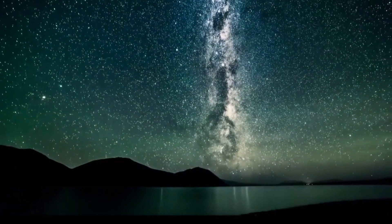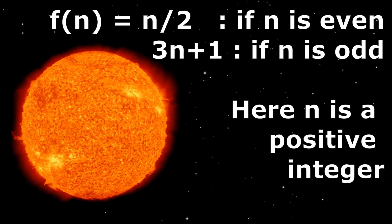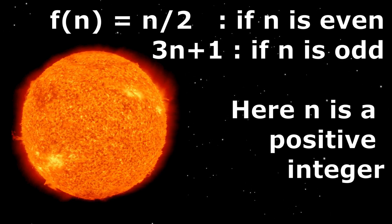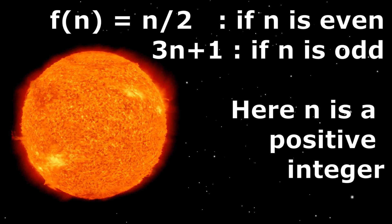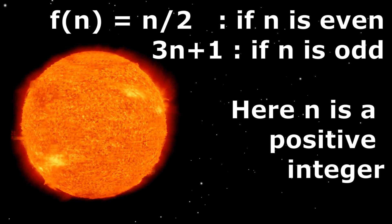We can also represent the problem in simple mathematical terms by defining a function. Function f(n) equals n/2 if n is even and equals 3n plus 1 if n is odd. Here, n is a positive integer.